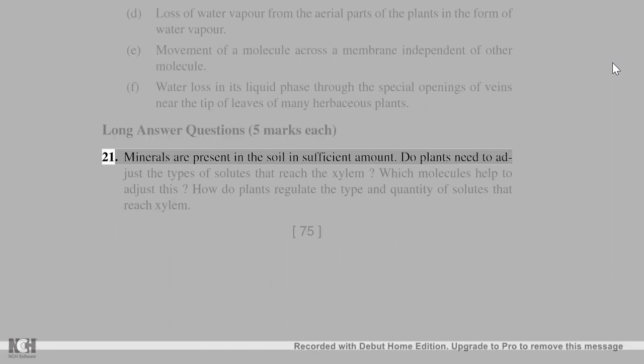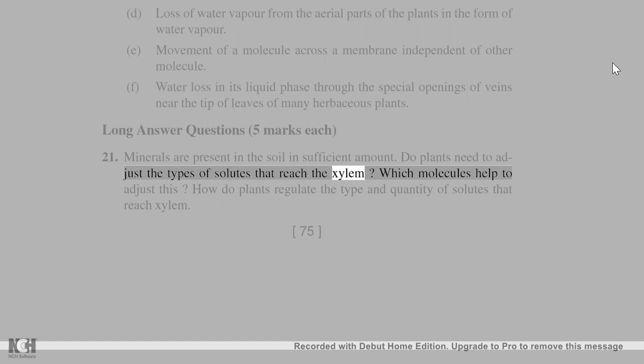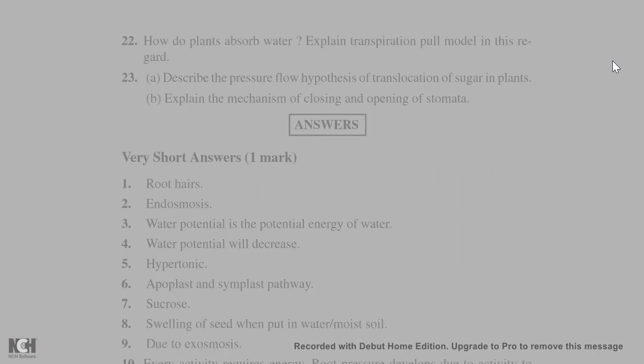Long answer questions, 5 marks each. 21. Minerals are present in the soil in sufficient amount. Do plants need to adjust the types of solutes that reach the xylem? Which molecules help to adjust this? How do plants regulate the type and quantity of solutes that reach xylem? 22. How do plants absorb water? Explain transpiration pull model in this regard. 23. A. Describe the pressure flow hypothesis of translocation of sugar in plants. B. Explain the mechanism of closing and opening of stomata.